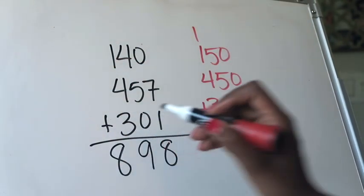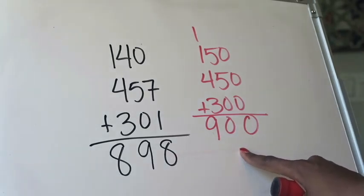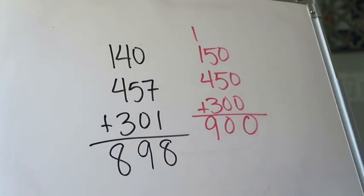And then the hundreds place: one plus four is five, and five plus three is going to be eight. No regrouping required there. So right now my answer is 898, and before I feel good about it, I'm going to say is that close to my estimated answer? It absolutely is, it's only two off, so I feel good and confident that my answer is correct.